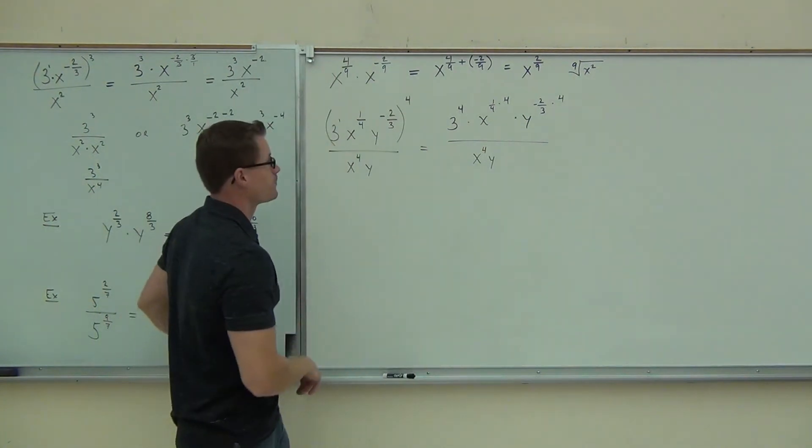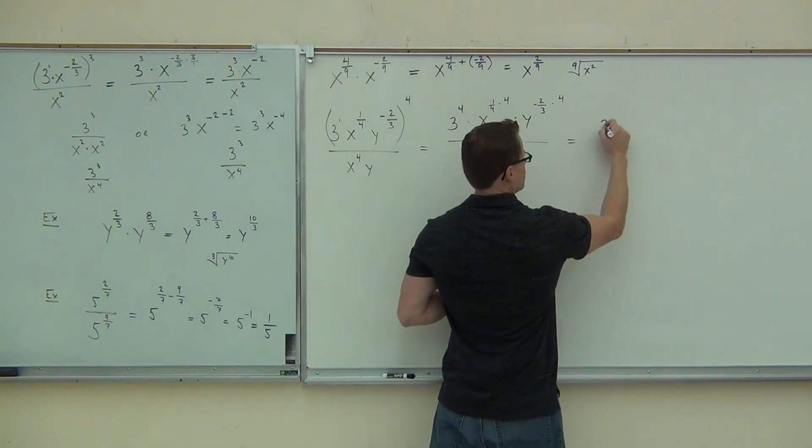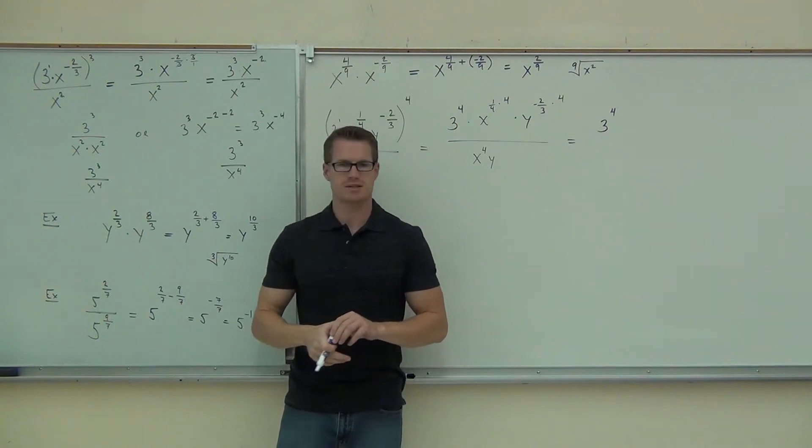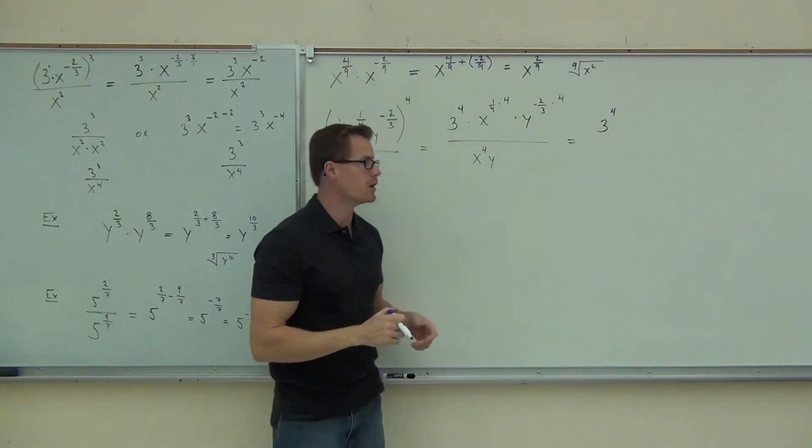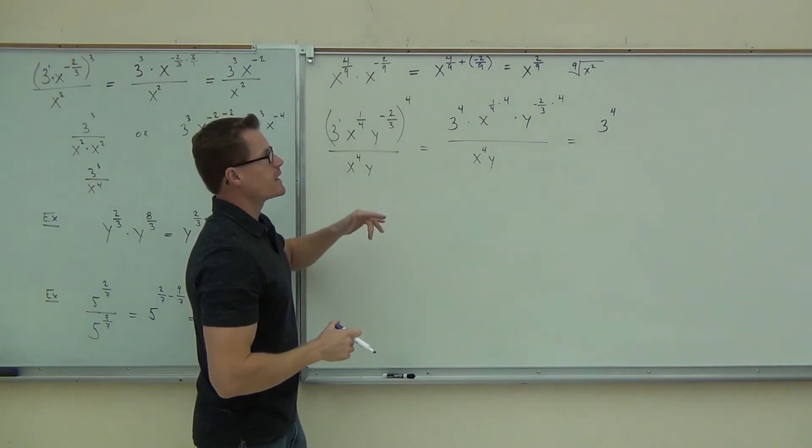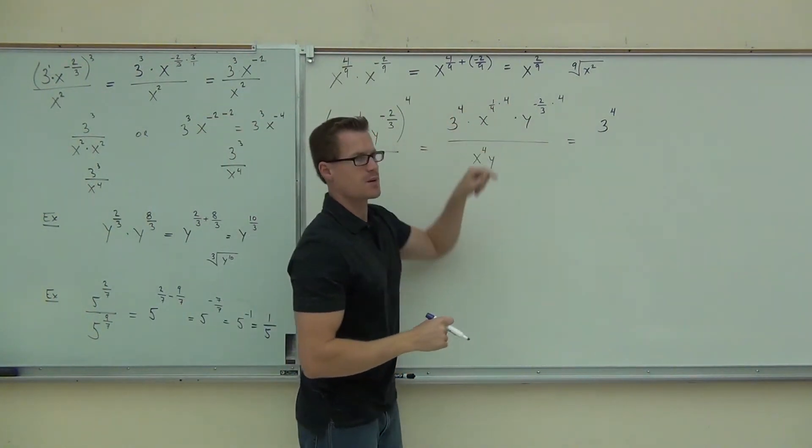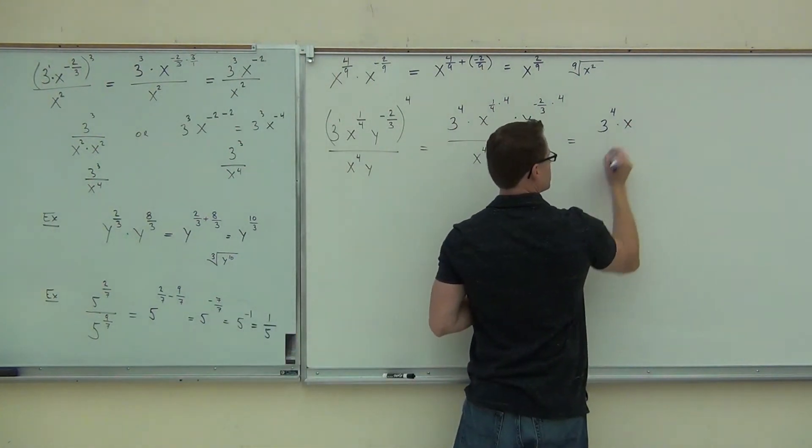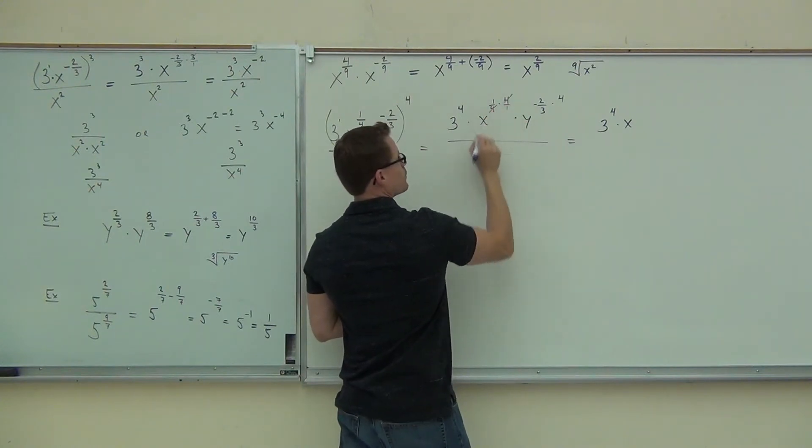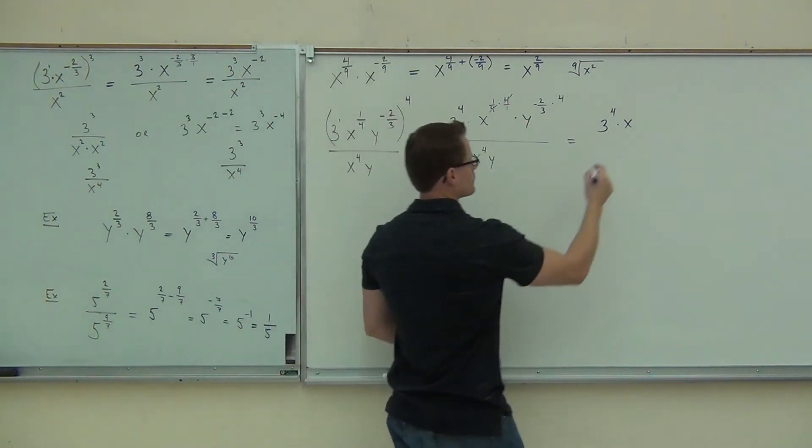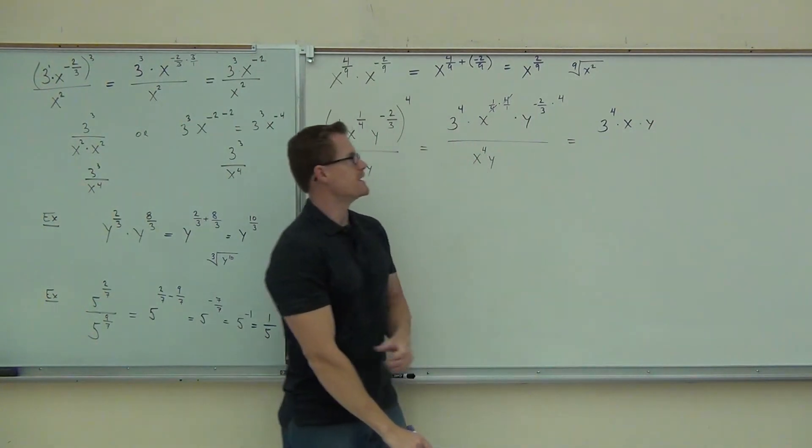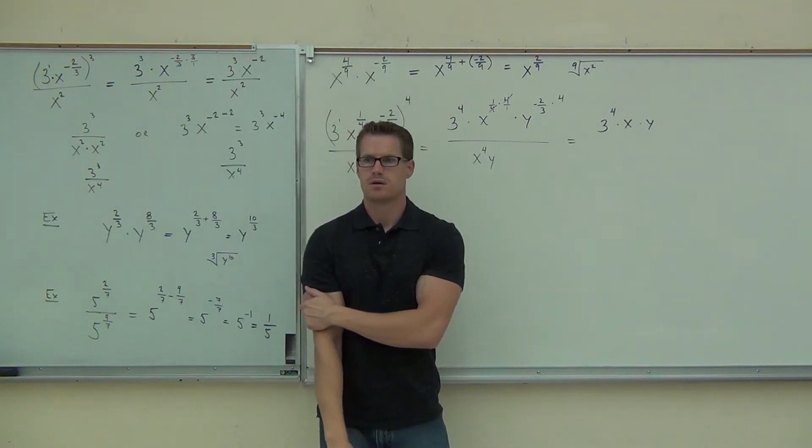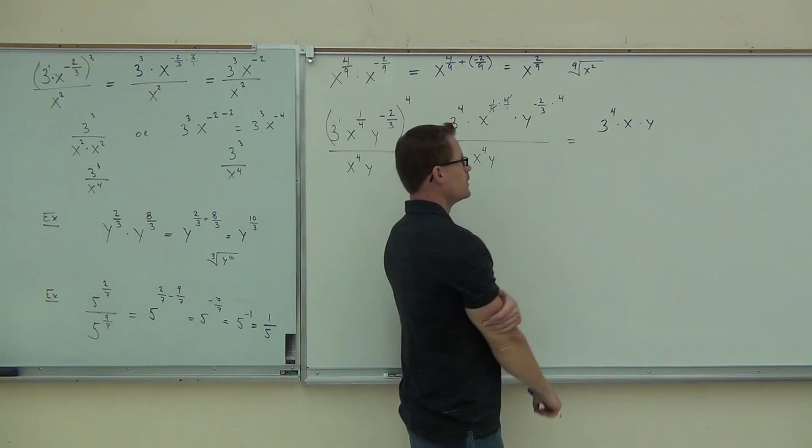Did you make it that far? Good. Let's see what those fractions are now. I'm going to leave three to the fourth. And you can put whatever that is, 81, if you'd really like to. That's fine. Let's go ahead and simplify whatever fractions we can. We have one-fourth times four. How much is that? So we're going to have just x to the one. x to the first power. We have four over four, let's simplify to give us a one. Times y. How about negative two-thirds times four? Negative two-thirds times four. How much? Negative eight-thirds. Nothing simplifies there.